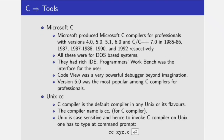Microsoft produced Microsoft C compiler for professionals with versions 4.0, 5.0, 5.1, 6.0, and C++ 7.0, in different years from 1985 through 1992. All these were for DOS-based systems. They had a rich IDE; the Programmer's Workbench was the interface for the user, and CodeView was a very powerful debugger. Version 6.0 was the most popular among C compilers for professionals.